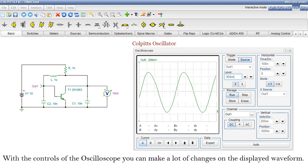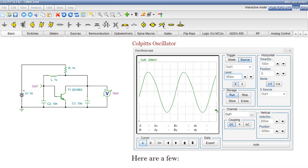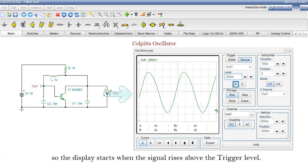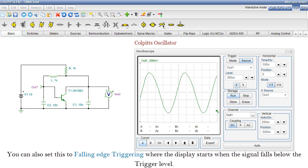With the controls of the oscilloscope, you can make a lot of changes on the displayed waveform. Here are a few. By default, on the oscilloscope's rising edge, triggering is used. So, the display starts when the signal rises above the trigger level. You can also set this to falling edge triggering, where the display starts when the signal falls below the trigger level.